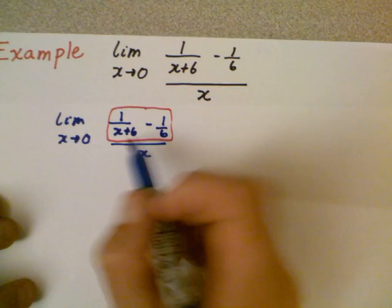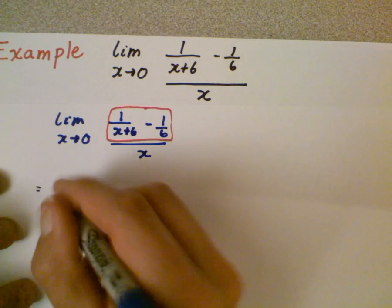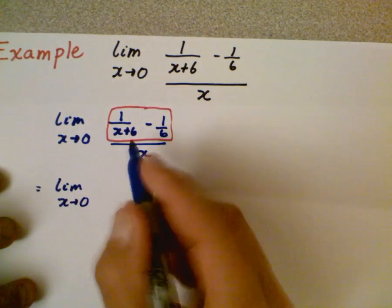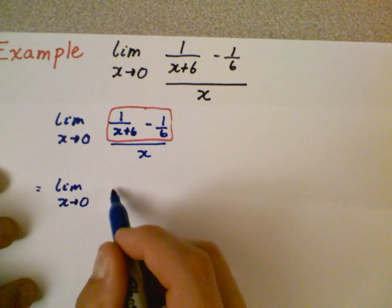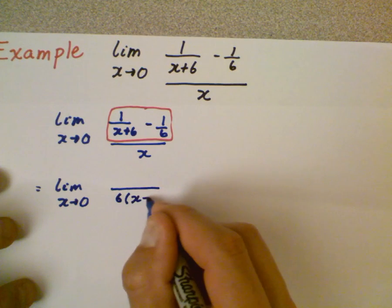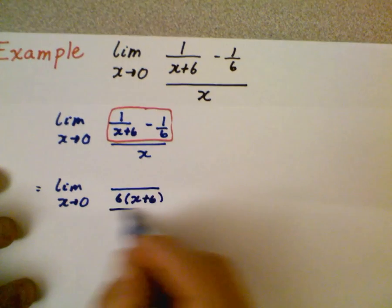So now we have two fractions and what we want to do is make a common denominator. The quickest way to get the common denominator in this case, the LCD, is just multiply straight across. So you're going to have a denominator that's 6 times x plus 6. We're going to leave the x on the bottom alone, you don't want to forget that.